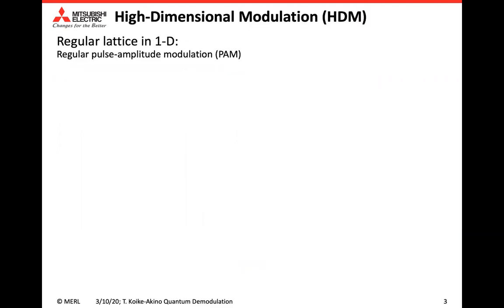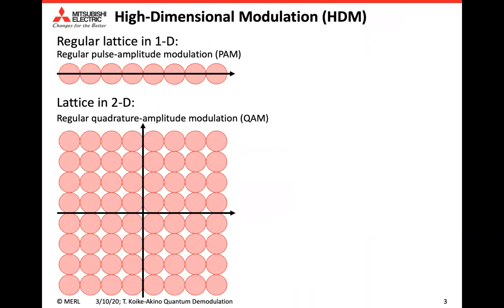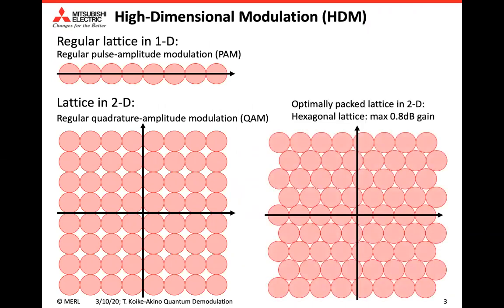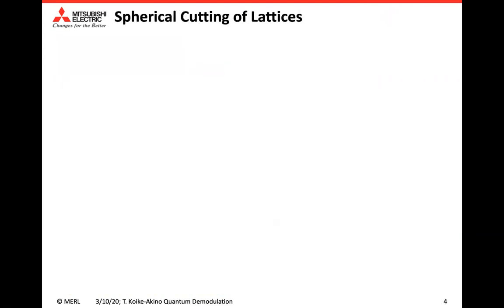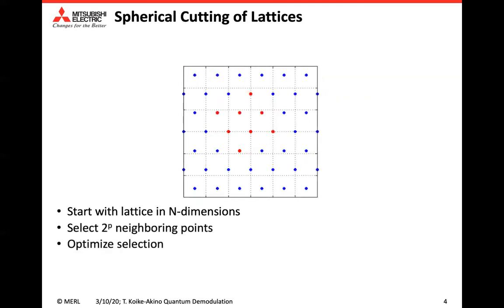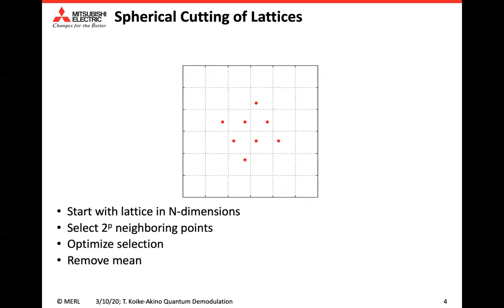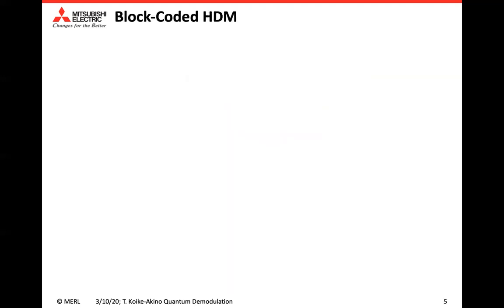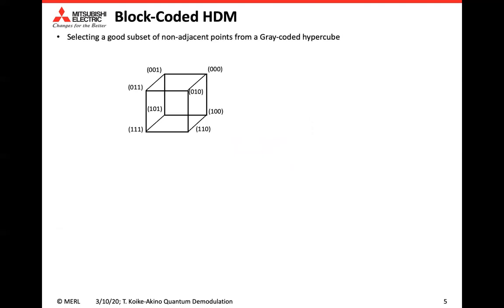For modulation systems in coherent optical communications, we may use 1D PAM or regular QAM in 2D cases. However, if we use a denser lattice like a hexagonal lattice, we can achieve more power-efficient constellations. Considering more dimensions in hyperspheres, we can select a finite constellation point to optimize HDM. However, this kind of spherical cutting method has a drawback in labeling optimizations. Alternatively, we can consider block-coded HDM.